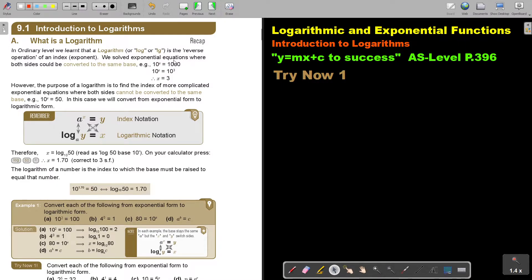We solve exponential equations where both sides could be converted to the same base. So, say it's 10 to the power, and then I make this also 10 to the power 3. When it's one term equals one term and the bases are the same, then we say x is 3. However, the purpose of a logarithm is to find the index of more complicated exponential equations where both sides cannot be converted to the same base.